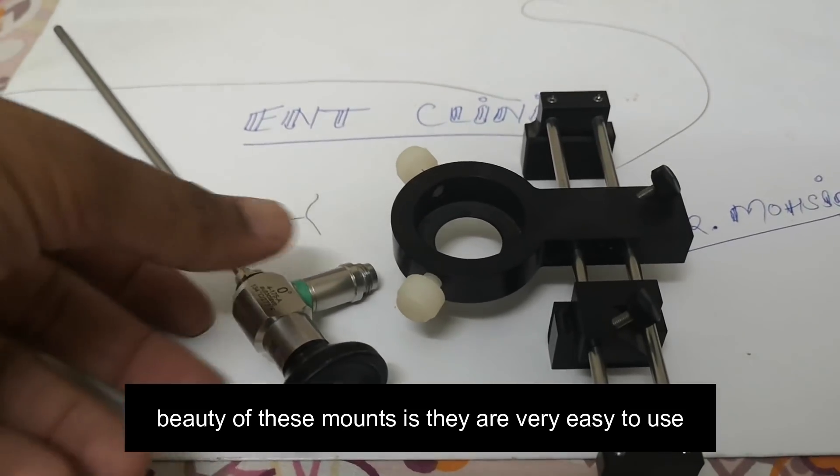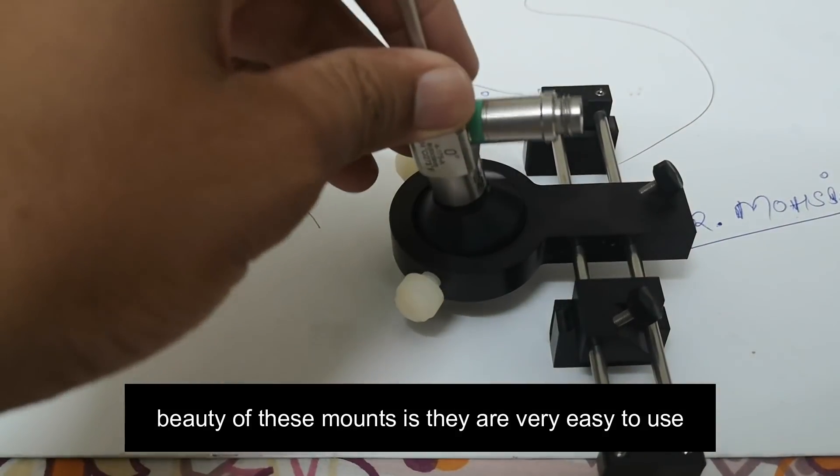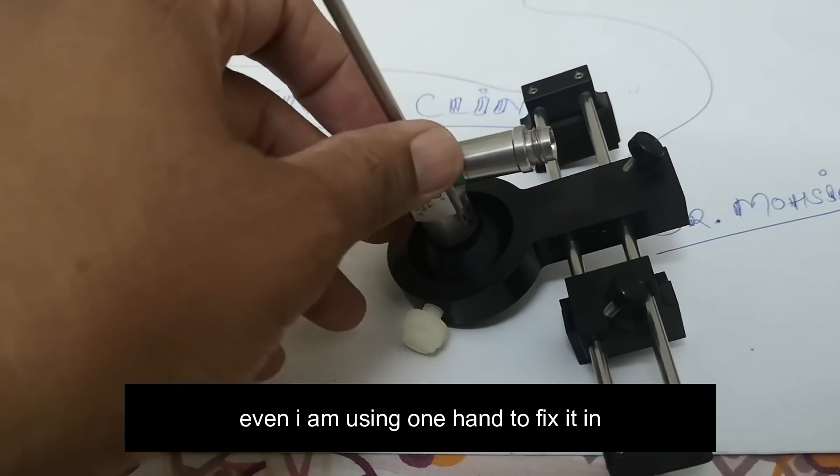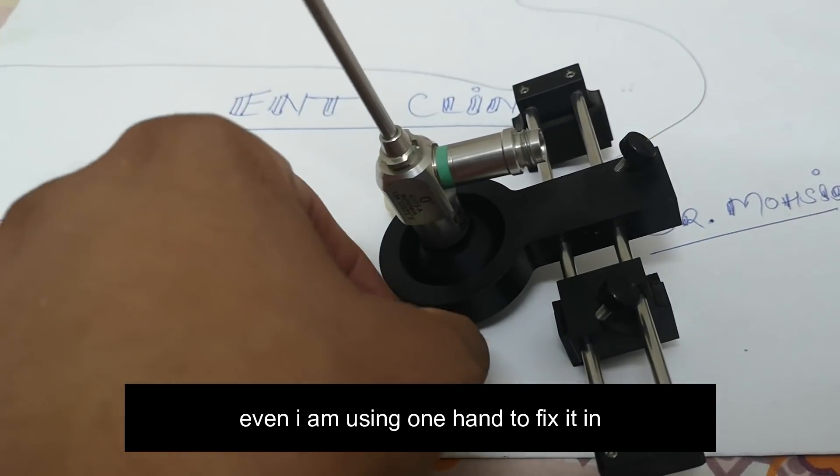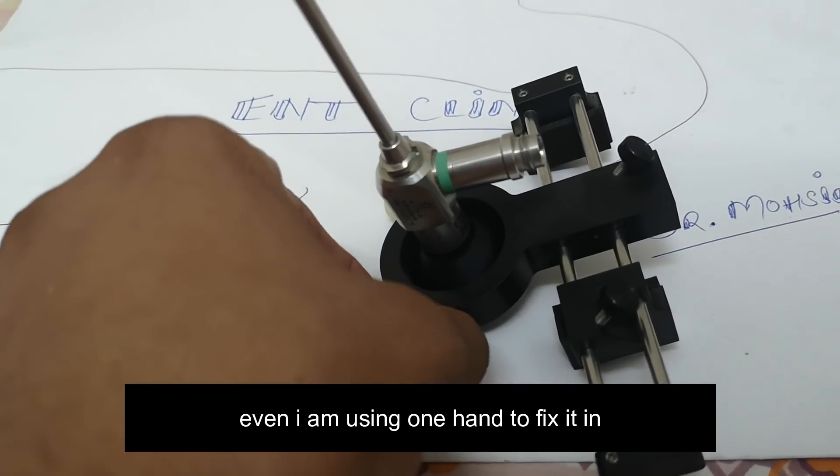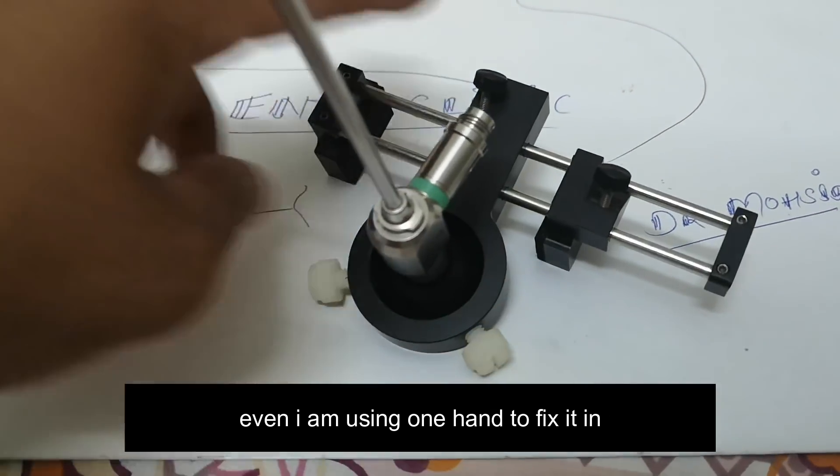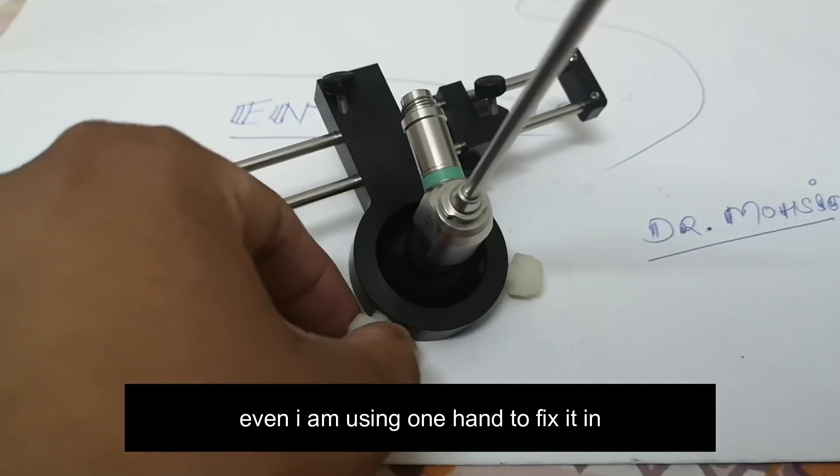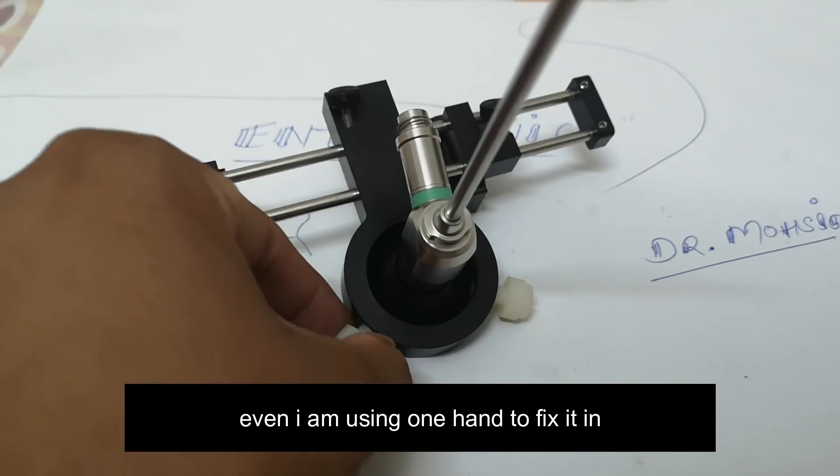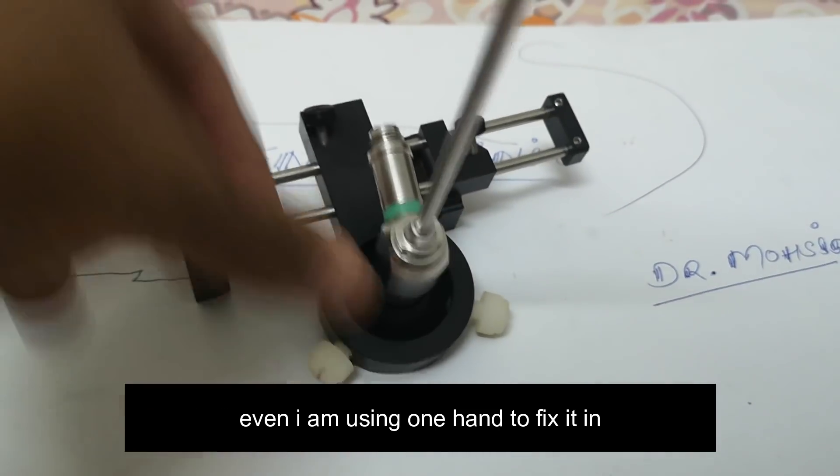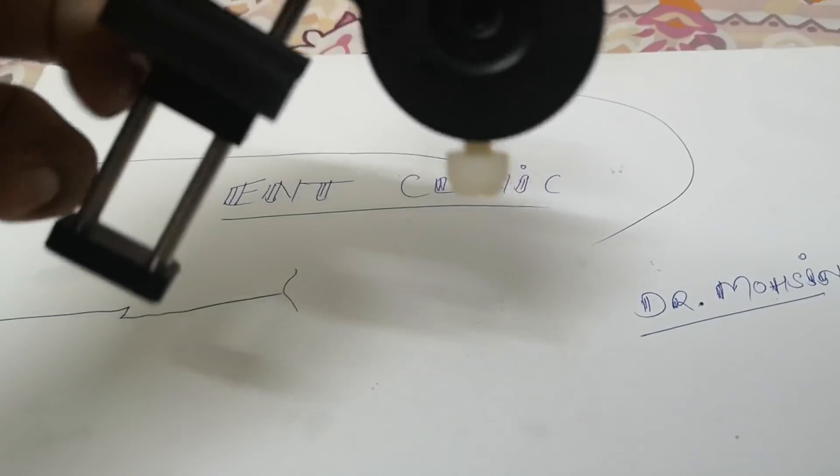The beauty of these mounts is they are very easy to use and the sizes are very good. The endoscope just fits in like this. Even I am just using one hand to fix it in. It goes this way and you can tighten it up. This is the way to put it in the mount.